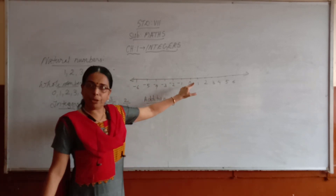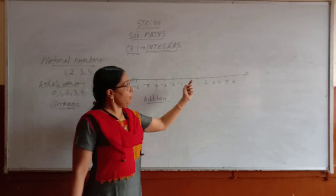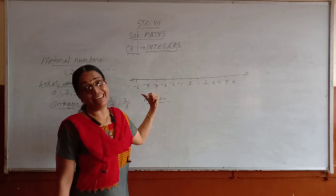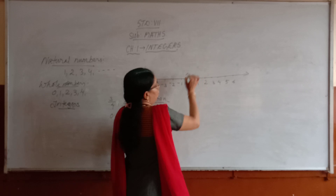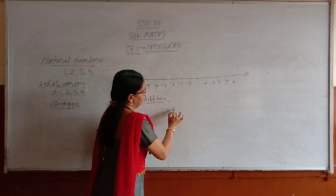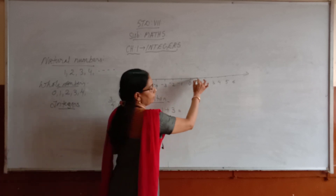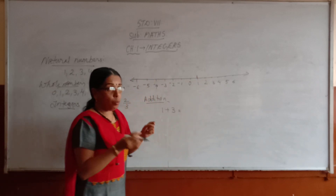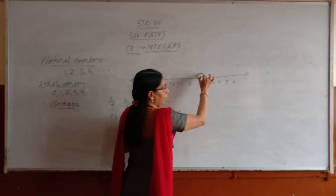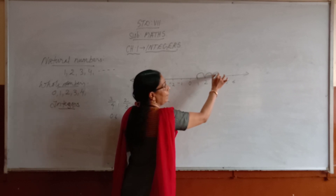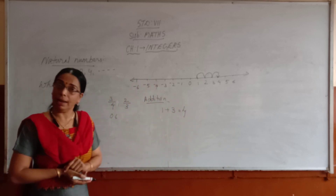This number line — as you go from 0 towards the right, the value goes on increasing, and from 0 towards the left, the value goes on decreasing. Now, suppose we are using the number line to add integers. See: 1 plus 3. Where is the integer 1? Here. How many you have to add? 3 steps — 1, 2, 3 — where it reaches: 4. So what is 1 plus 3? That is 4.